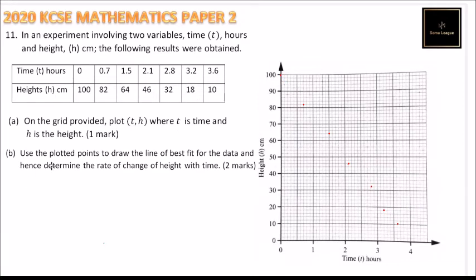So from there, we now use the plotted points to draw the line. The best line of fit means you draw a line that passes through majority of these points and near these points. So if we plot that, we can see now that that line passes through majority of the points. So that is the best line of fit and it is near the majority of the points, as you can see.